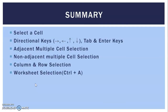Let's quickly summarize. We studied: selecting a particular cell; use of directional keys — left, right, up and down arrow keys; then Tab and Enter keys for moving left to right and top to bottom; then adjacent multiple cell selection; then non-adjacent multiple cell selection; then how to select a particular column or row. For column selection, the shortcut key is Control + Space Bar, and for row selection the shortcut key is Shift + Space Bar. For complete worksheet selection, the shortcut key is Control + A.